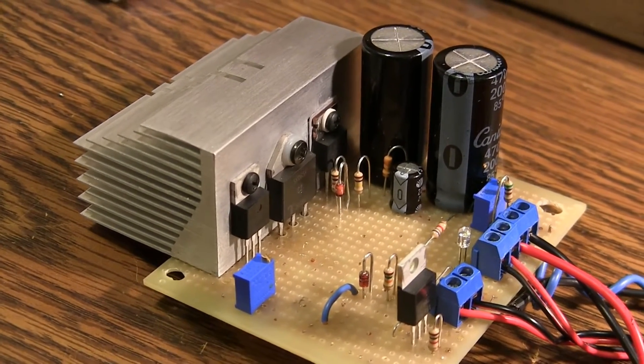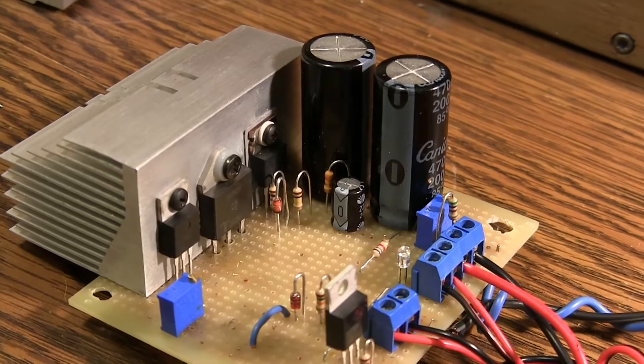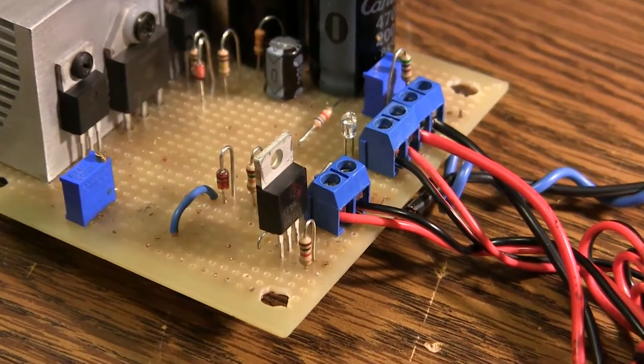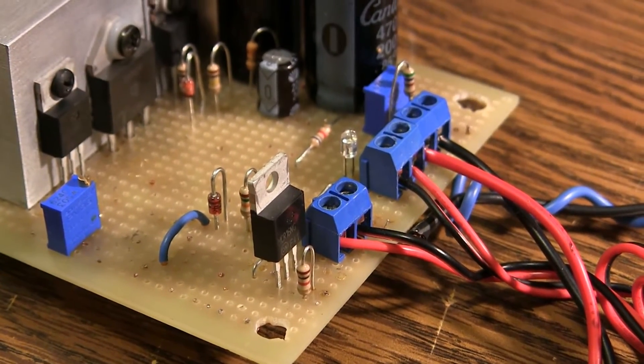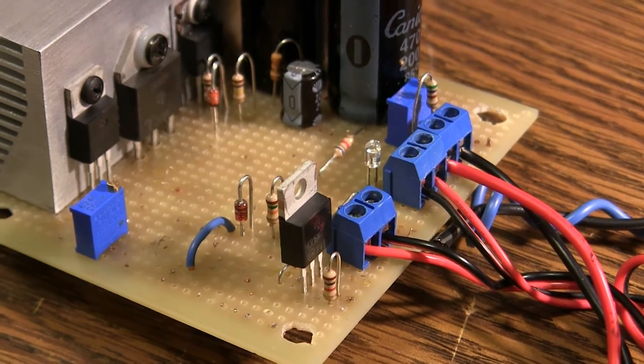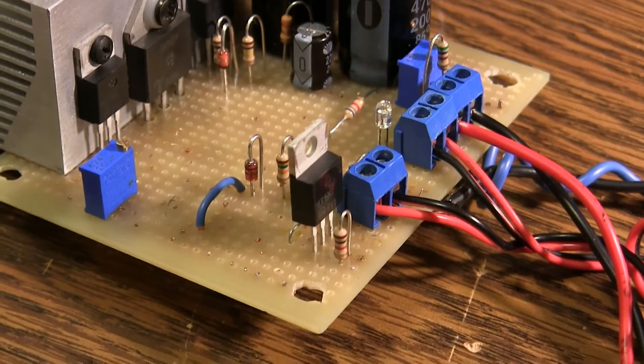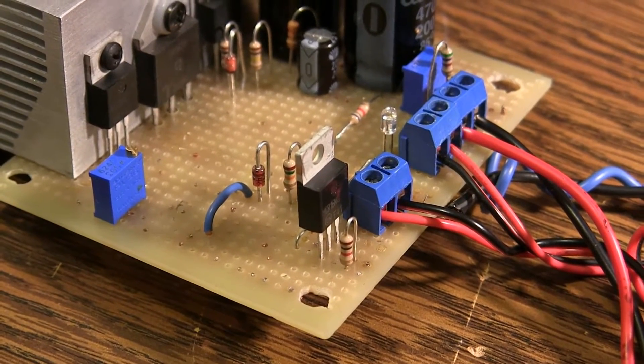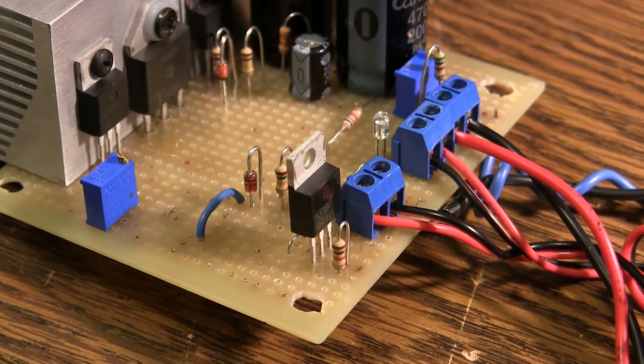What it does is charge up those capacitors, and then when the voltage threshold kicks the first SCR on, which is basically a transistor relay, it just either has on or off state. It doesn't have a variable output.